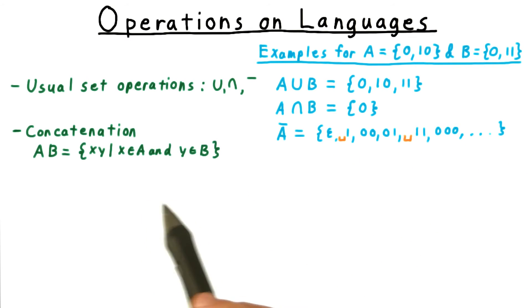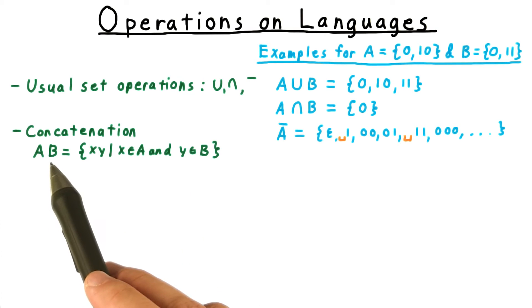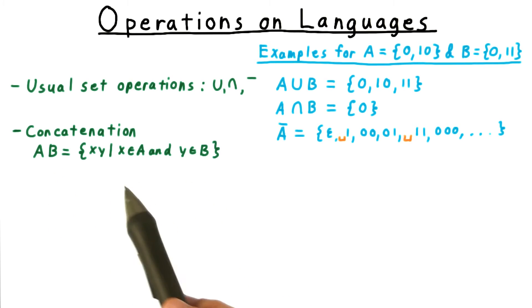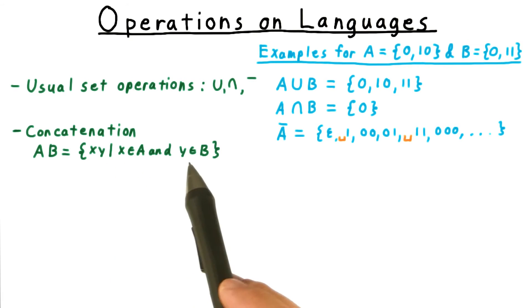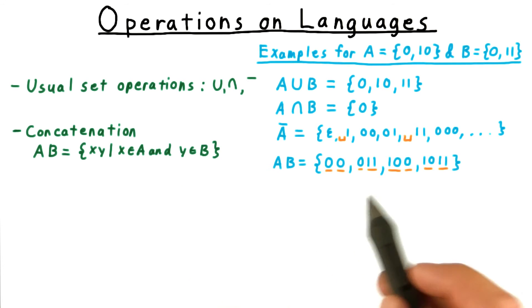In addition to these standard set operations, we also define an operation for concatenating two languages. The concatenation of A and B is just all strings that you can form by taking a string from A, let's say x, and appending to it a string y from B.